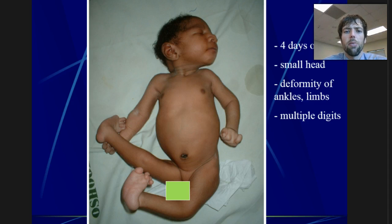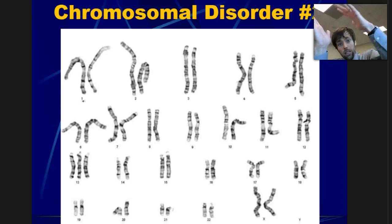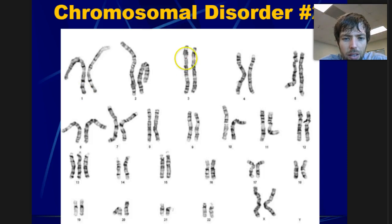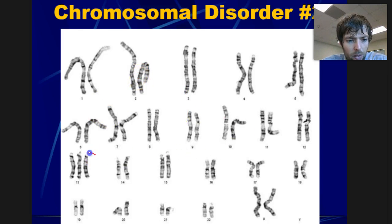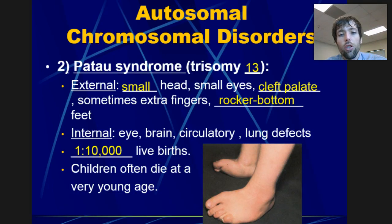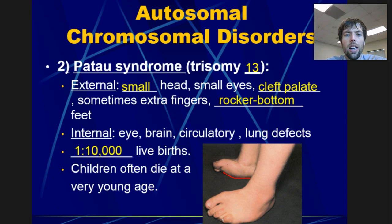Let's take a look at disorder number two. The chromosomes might look bent, but that's because the karyotype was taken as the DNA was floating in the cell — nothing's wrong with those. What's wrong is over here: monosomy or trisomy? Trisomy. This disorder is known as Patau syndrome, or trisomy 13, because it affects chromosome 13. Features include small head, small eyes, a cleft palate, rocker bottom feet — see how the feet curve on the bottom — a lot of internal birth defects and a pretty low survival rate.